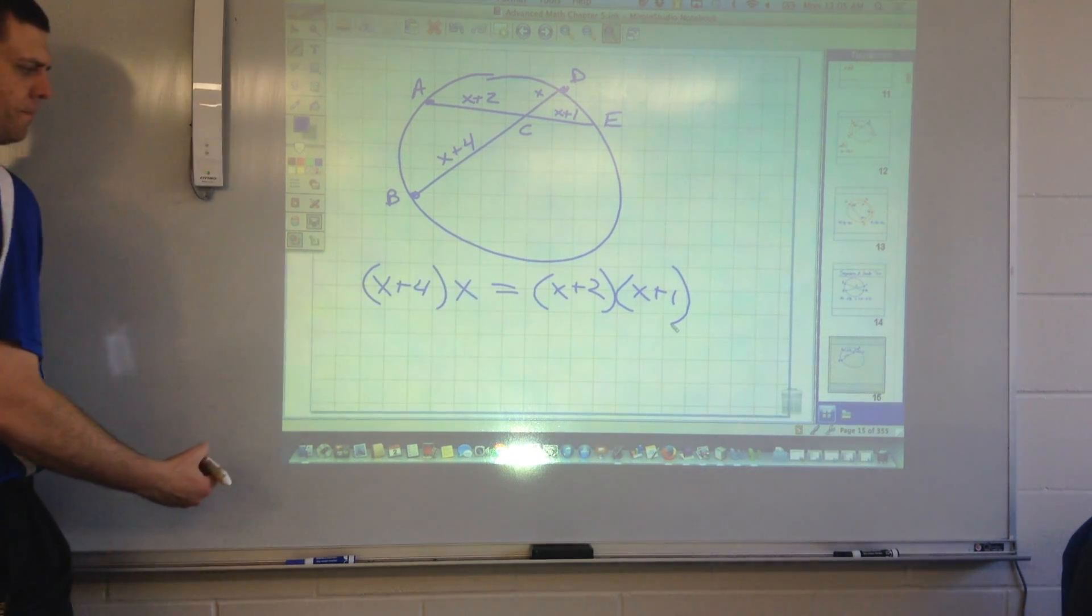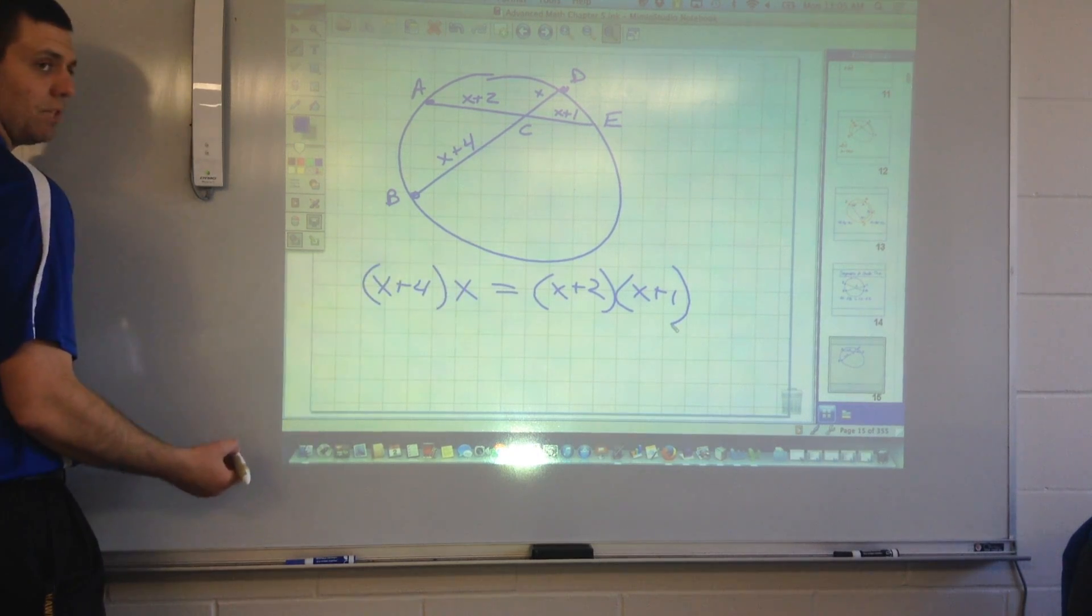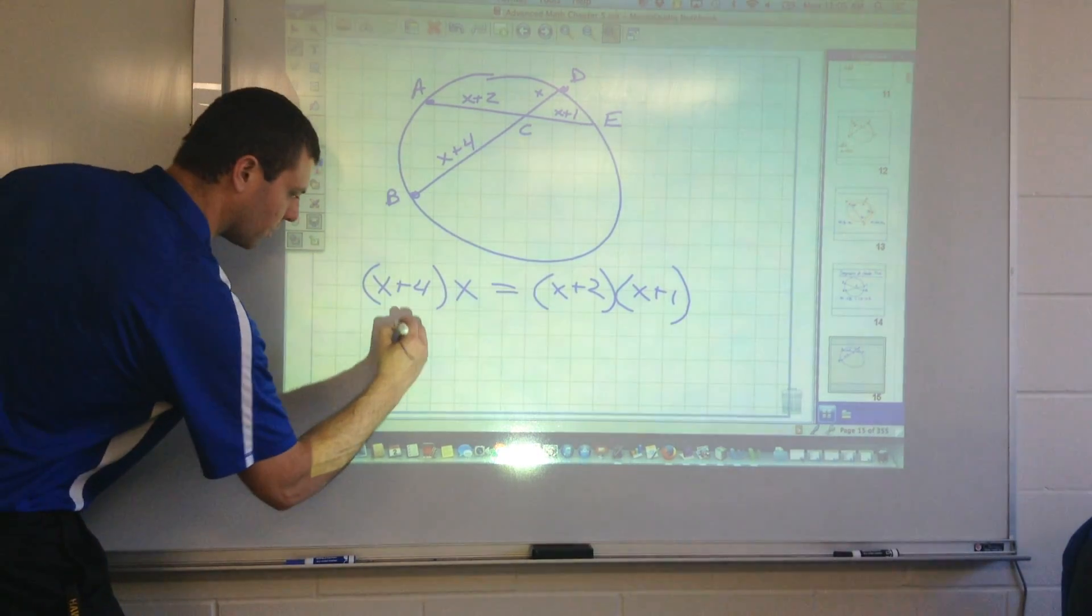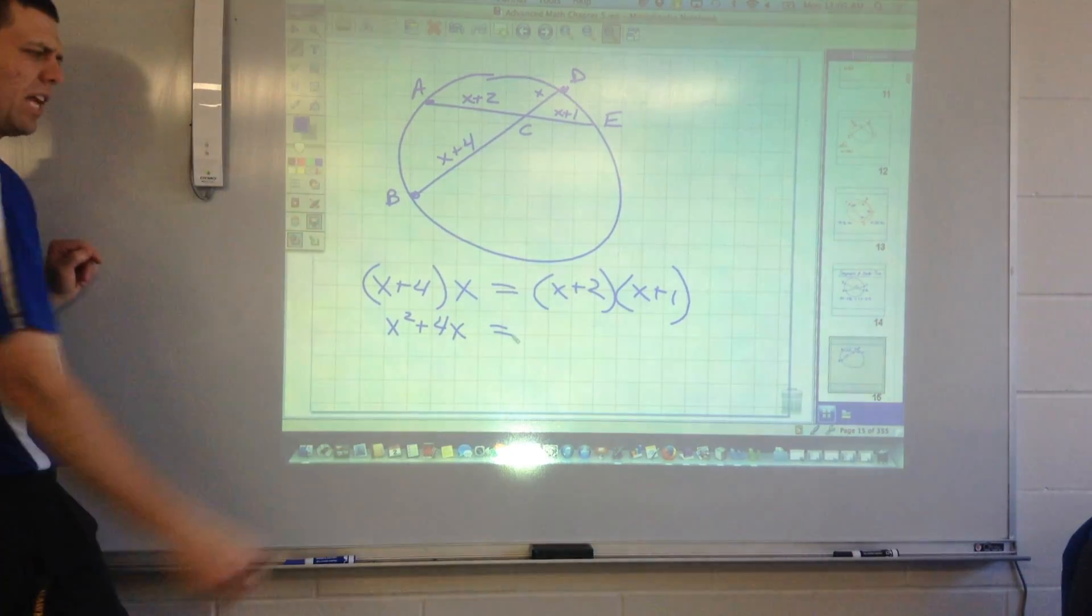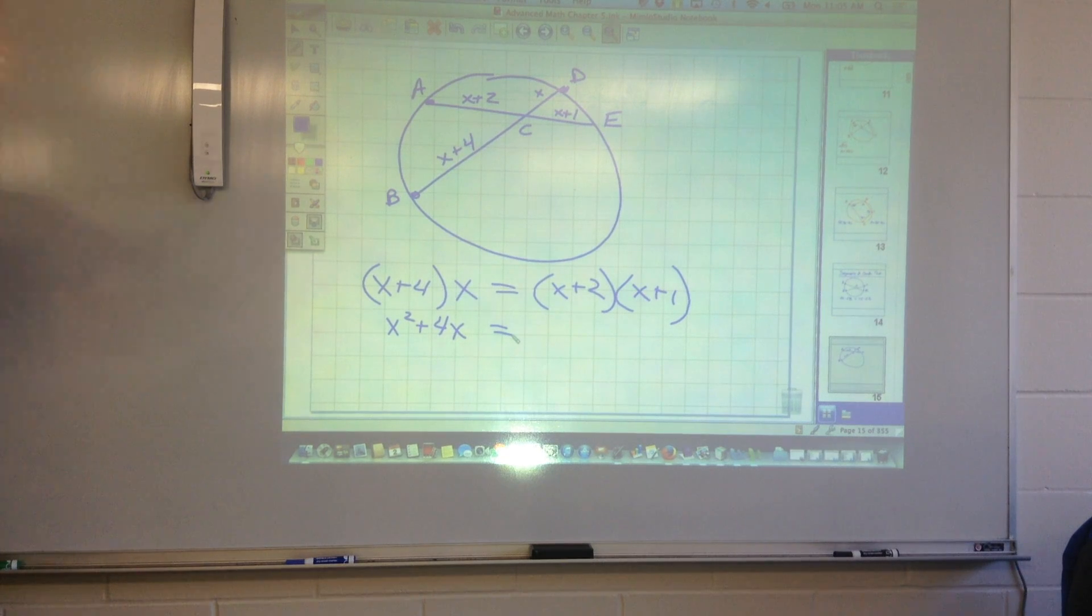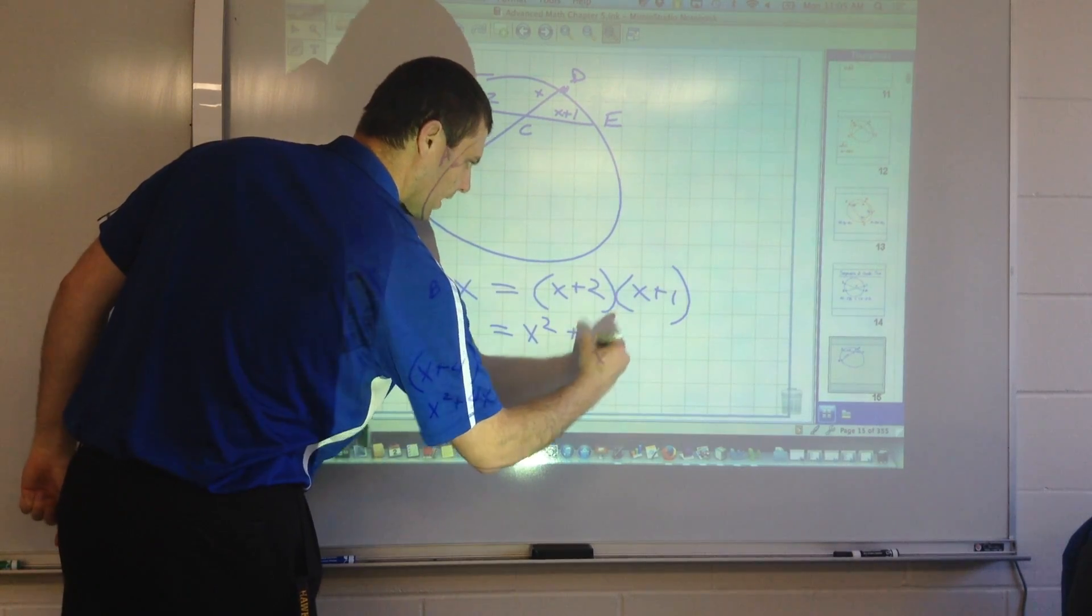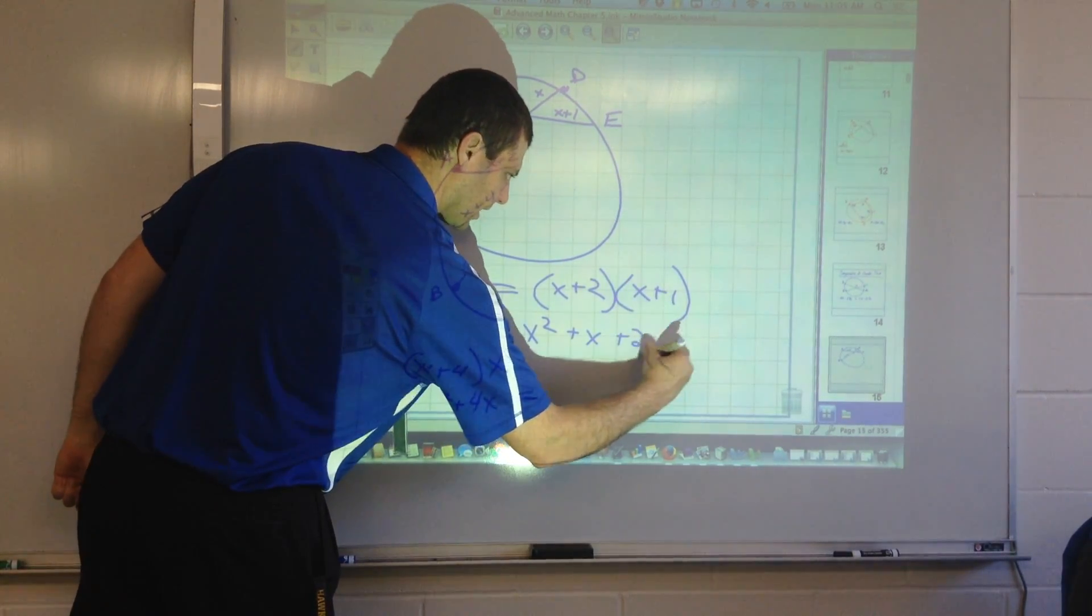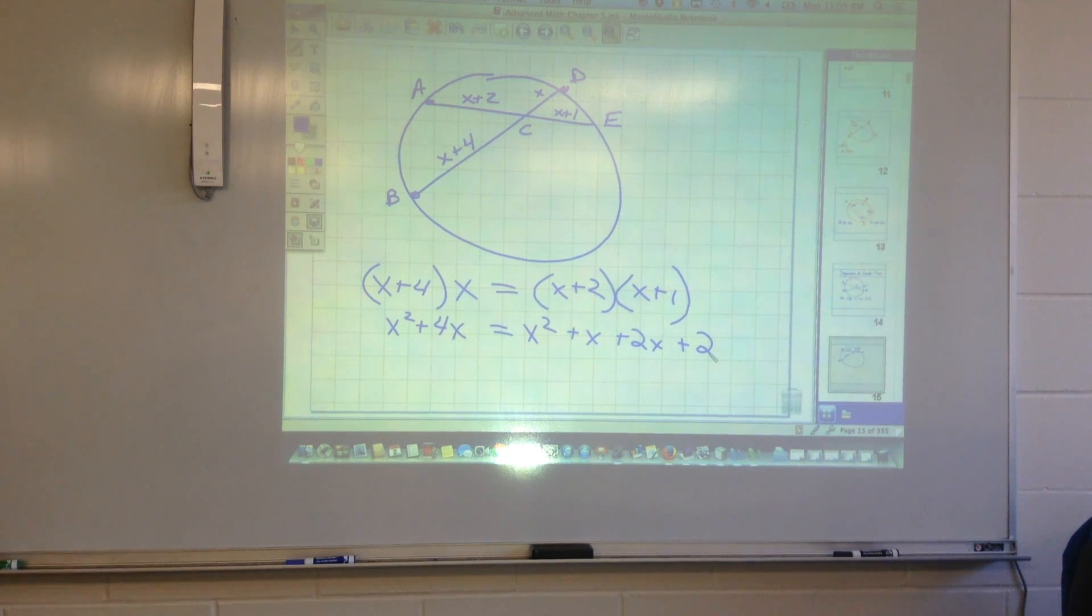Multiply this together, what do you get? X times X. X squared plus 4X equals, how do I multiply two binomials together? Foil. Foil. Okay. X squared plus X plus 2X plus 2. Now what?